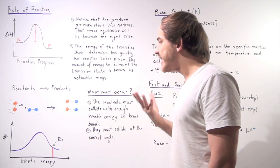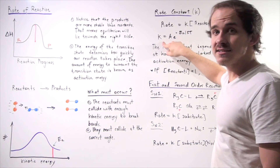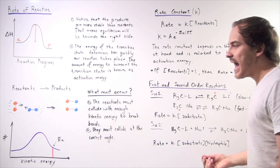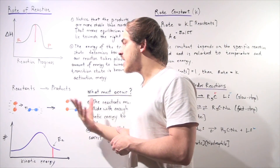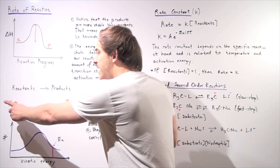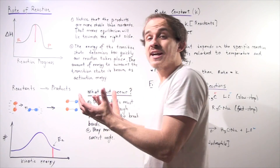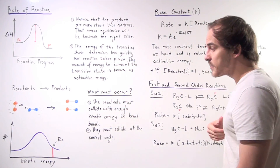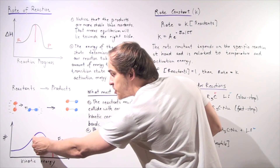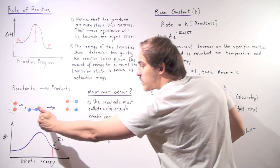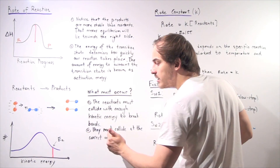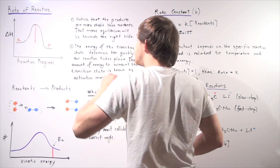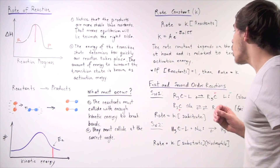When we increase the temperature, we actually increase the rate constant according to this equation. By increasing the temperature of our reaction, our reactants have more kinetic energy to collide. When we increase temperature, we shift this entire hill towards the right so that more molecules are able to surmount this activation barrier.